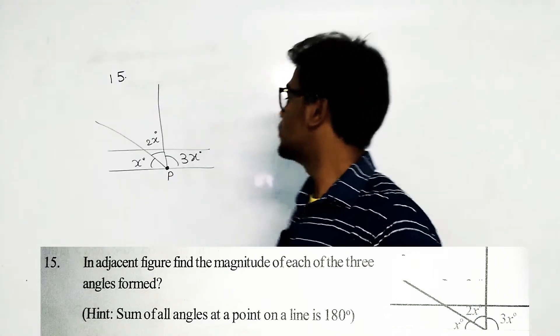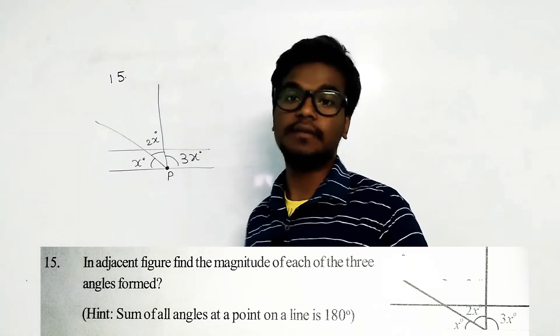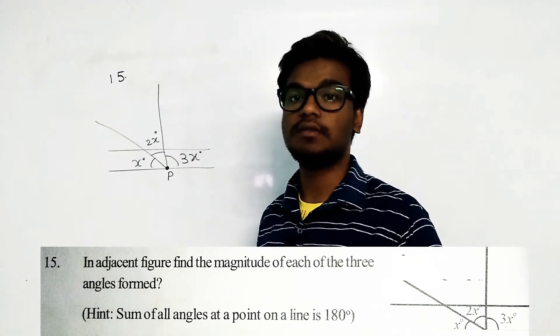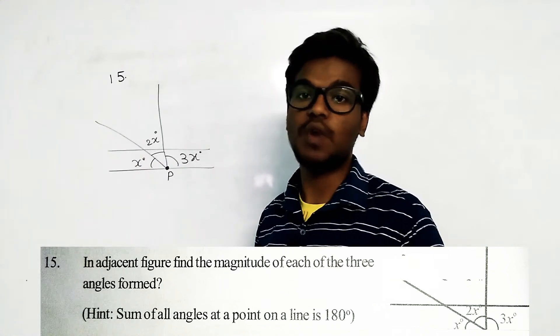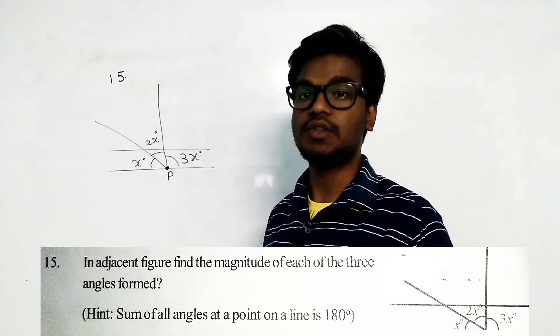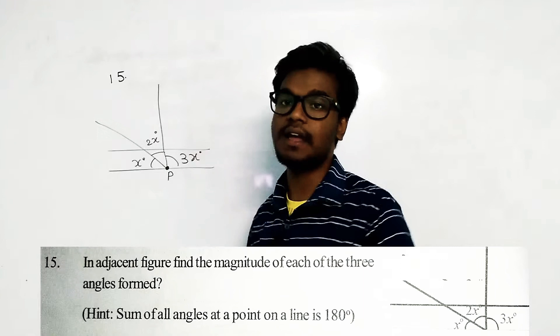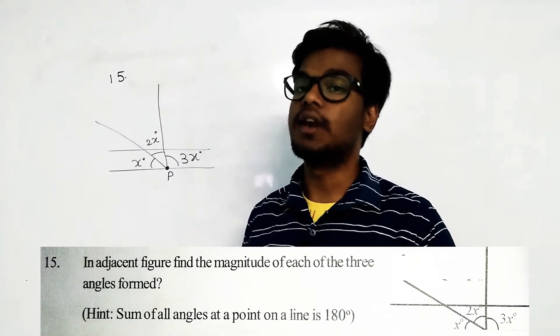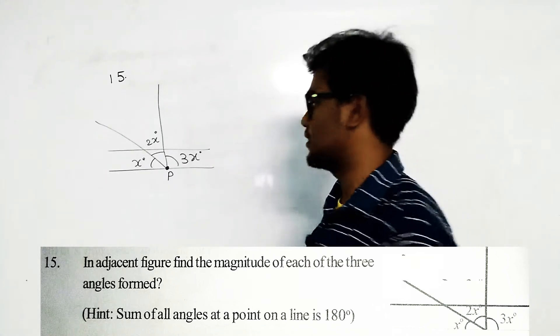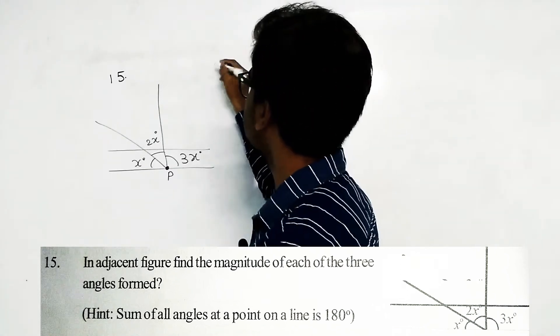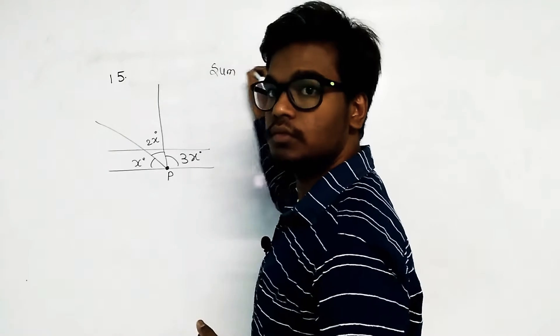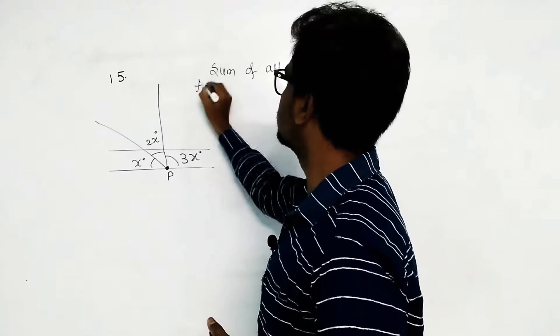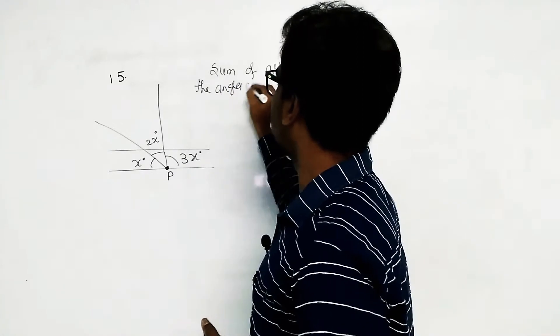The hint they have given is: sum of all the angles at a point on one side of the line is 180 degrees. Or you can see all these angles as linear pair angles. Sum of all the adjacent angles on a line will be equal to 180 degrees.